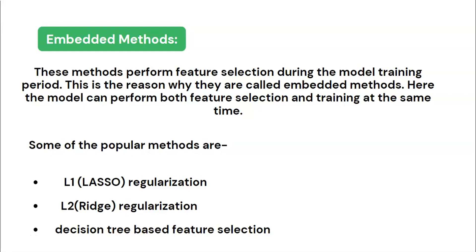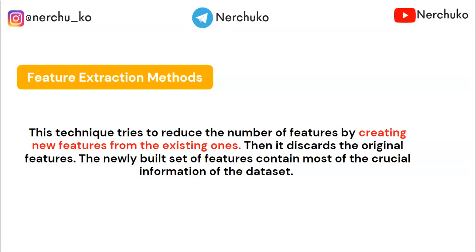Now we move to feature extraction methods. This technique reduces the number of features by creating new features from the existing ones, then discarding the original features. The newly built set of features retains most of the crucial information from the dataset. In feature selection, the new dataset is a subset of the old one with the same features; in feature extraction, the new dataset is completely different from the old one.